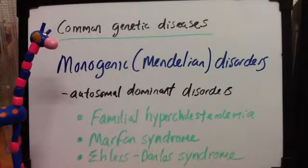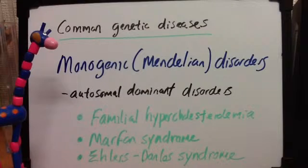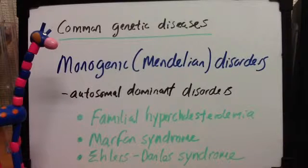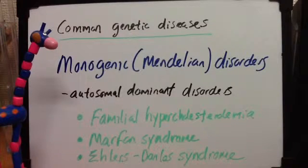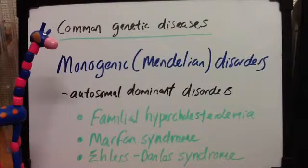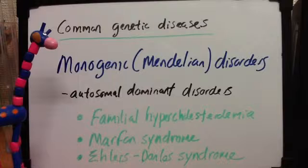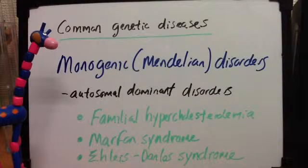Let's talk about three examples: familial hypercholesterolemia, Marfan syndrome, and Ehlers-Danlos syndrome. First, familial hypercholesterolemia, which is a subgroup of hyperlipoproteinemia. This is the most frequent Mendelian disorder, occurring in 1 in every 500 births, and it is a mutation of the gene encoding the LDL receptor, which is responsible for 70% of plasma cholesterol. For heterozygotes, there is a two to three times elevation of plasma cholesterol levels, and for homozygotes it's five times the elevation.